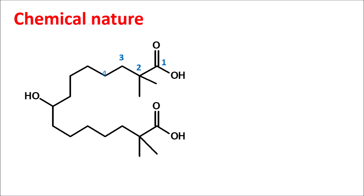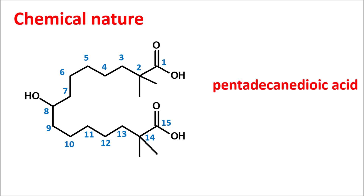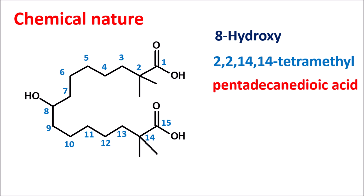Numbering the carbons 1 through 15, we can see it has 15 carbons with two carboxylic acids, so we write the suffix as pentadecane-dioic acid. At the eighth position a hydroxyl group is present, so we write this as 8-hydroxy. Methyl groups are attached at the second and 14th positions — totally four methyl groups — written as 2,2,14,14-tetramethyl. That is the simple IUPAC name of Bempedoic acid.